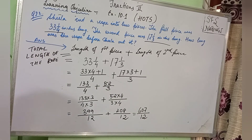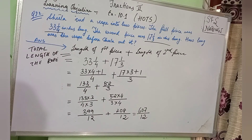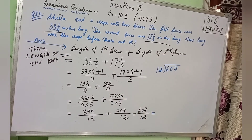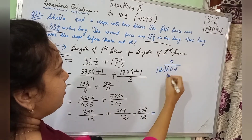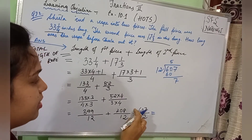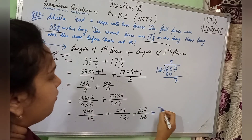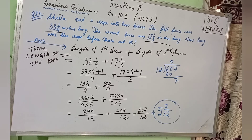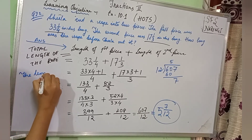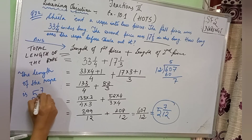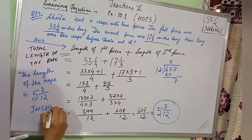Now 607 is a big number and we can convert this improper fraction to a mixed fraction. Divide 607 by 12 — 12 multiplied by 50 is 600, so the remainder is 7. So 607/12 can be written as 50 7/12. The length of the rope is 50 7/12 inches.